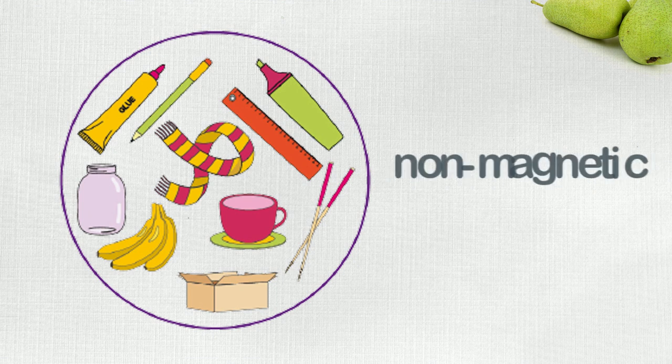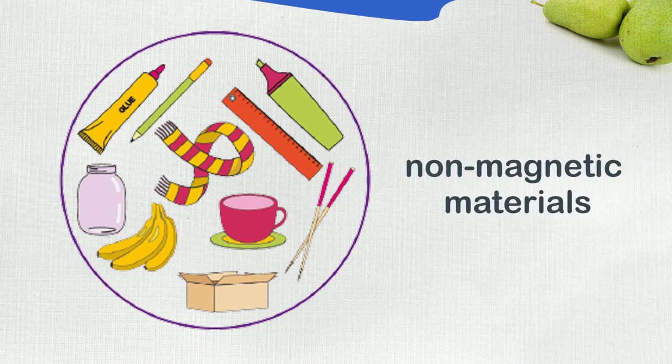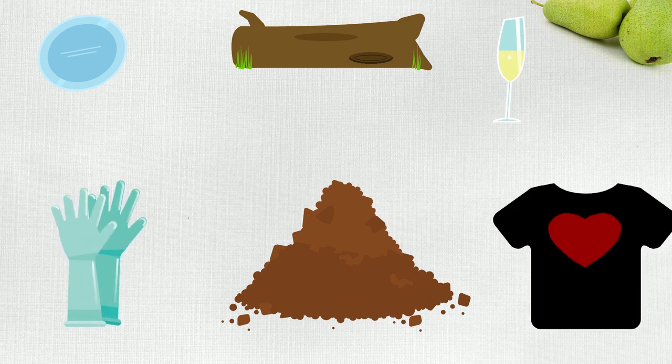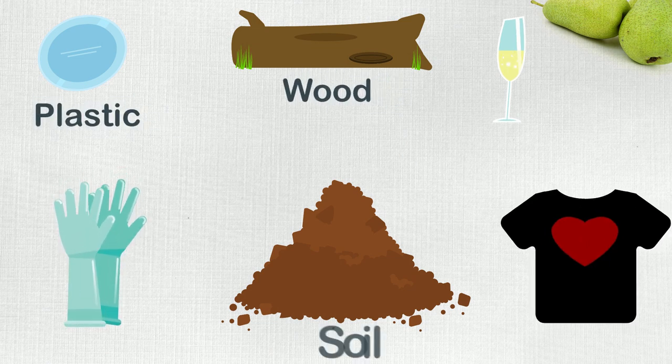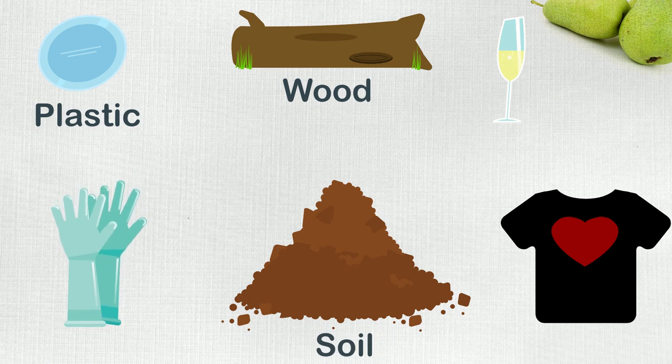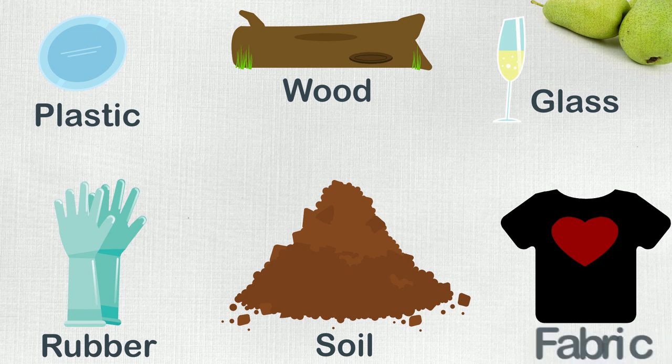Whereas those objects which do not get attracted to magnet are called non-magnetic materials, such as those items made with wood, plastic, soil, glass, rubber, and fabric.